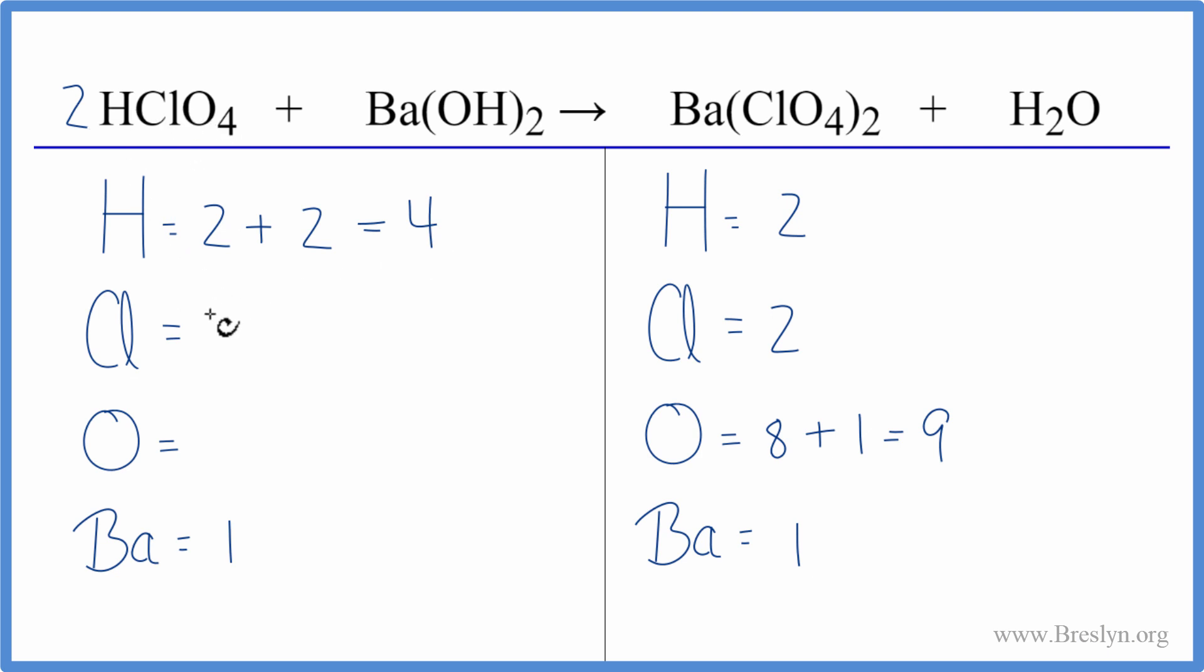Chlorine, one times two. So we balance the chlorine, that's what we were trying to do. And then oxygen, four times two is eight plus two times the one oxygen is two. So we have ten oxygen atoms and then we still have the one barium.